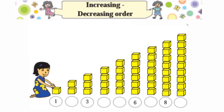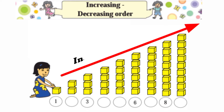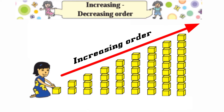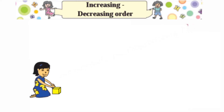Hello everyone, today's topic is increasing and decreasing order. Increasing means from smallest to biggest — chote se bade ki taraf — usko increasing order bolte hai. Same way, decreasing order is the opposite. So we are going to see increasing order.